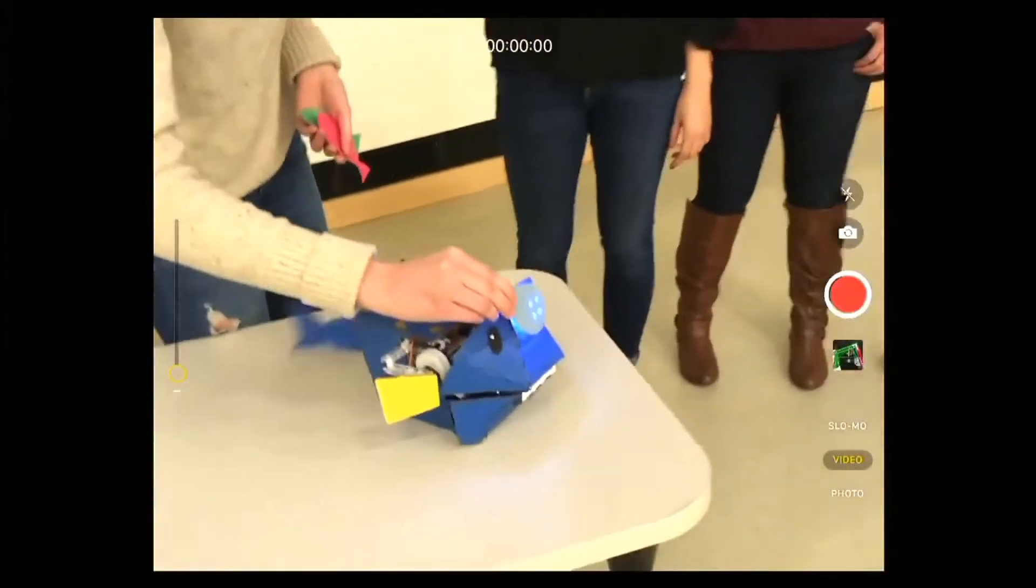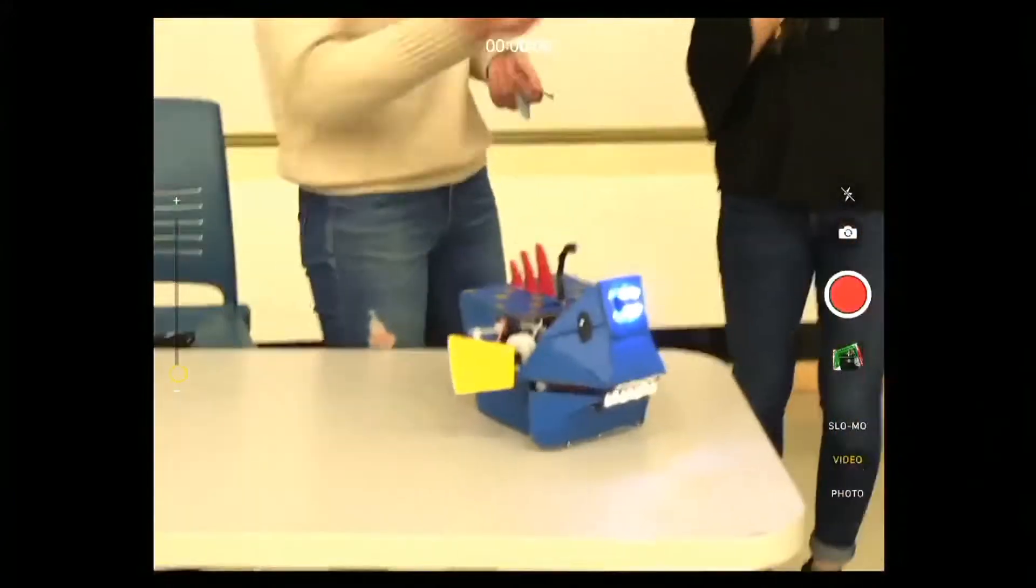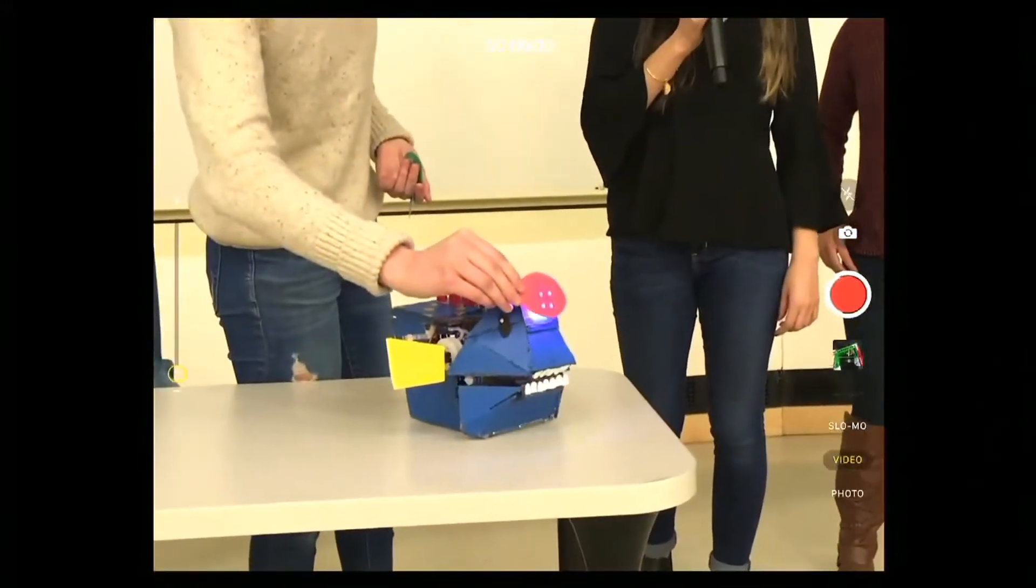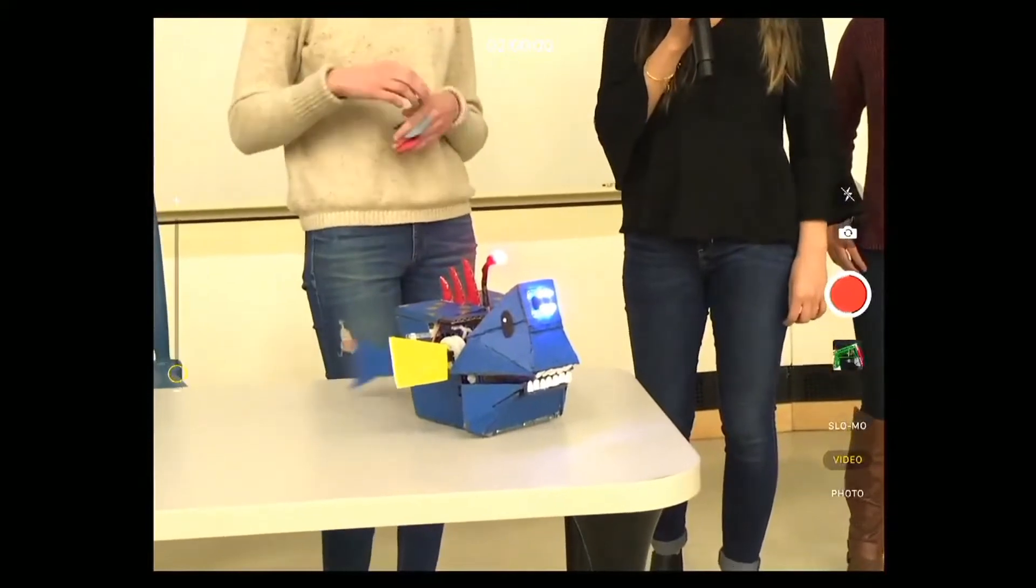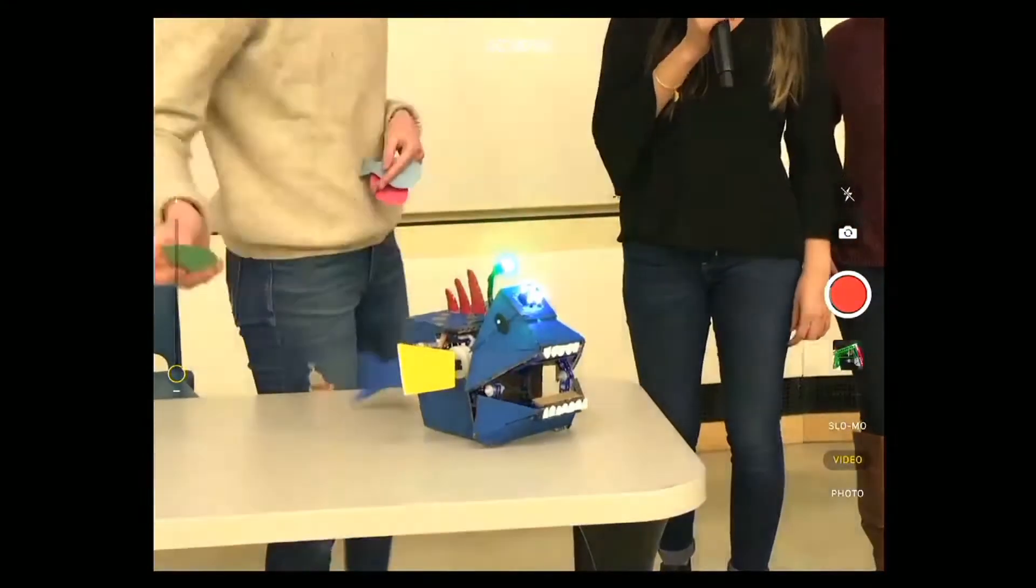For the blue fish, as you can see, the mouth opens a little bit and the tail gets faster. For the red fish, the mouth stays closed and the tail goes to its resting speed. For the green fish, it opens its mouth the widest and the tail moves the fastest.